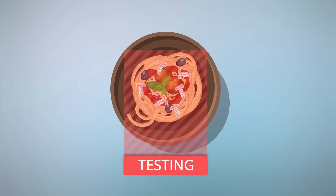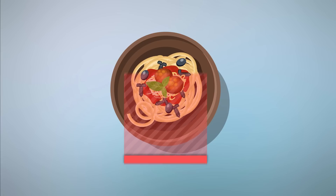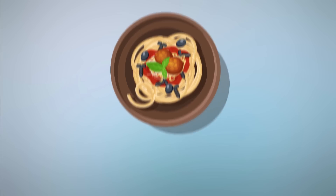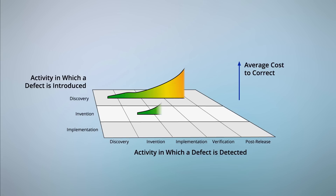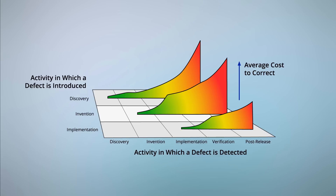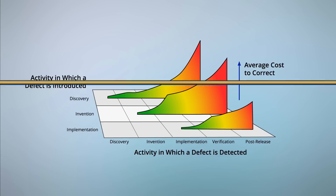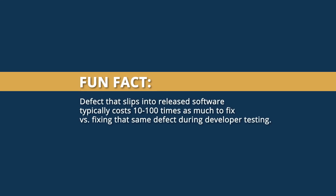Uh-oh, it looks like we inserted some defects along the way, and fixing those now is going to be a pain. You've probably seen this graphic that shows how software defects become much more expensive to remove the later on they are detected. Did you know that a defect that slips into release software typically costs 10 to 100 times as much to fix versus fixing the same defect during developer testing?